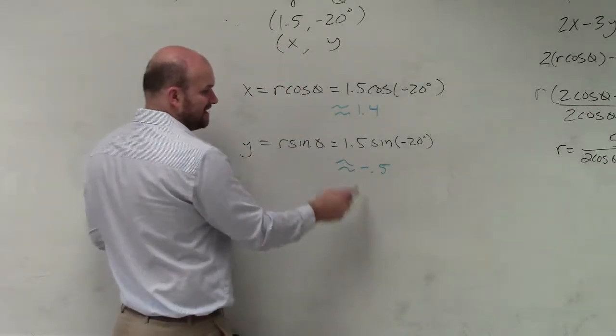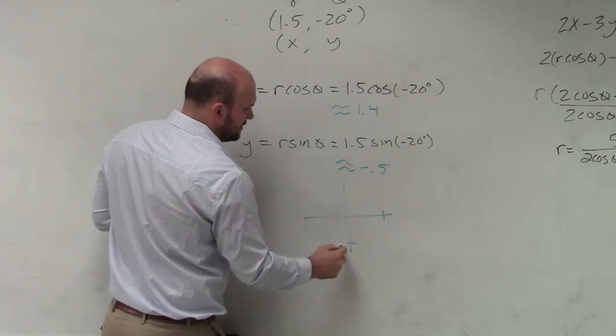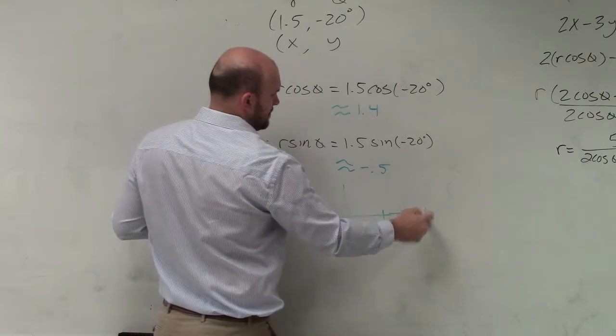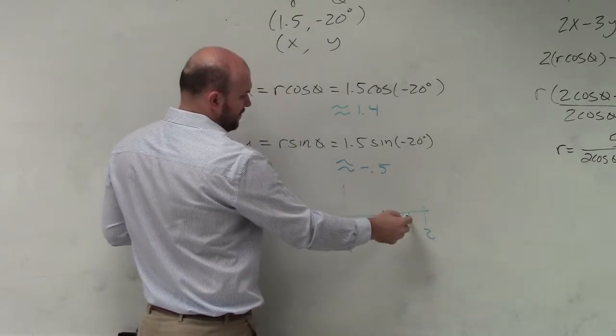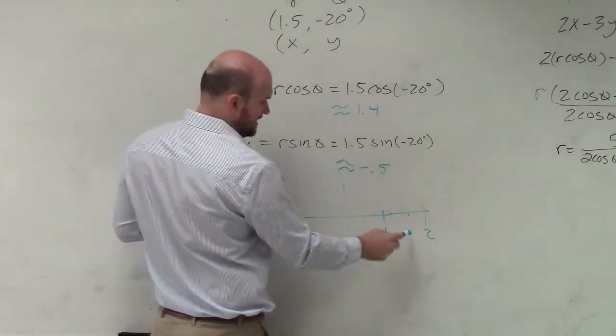So does that kind of make sense? Think about if you were to graph this. Let's say here's 1, and here's 1. If I go 1.4 down 0.5, that's like right there. Would you guys agree with me? That's that point?